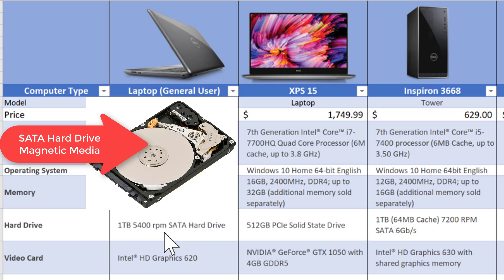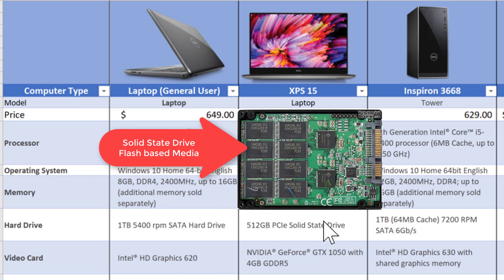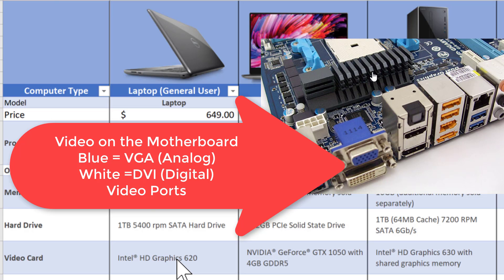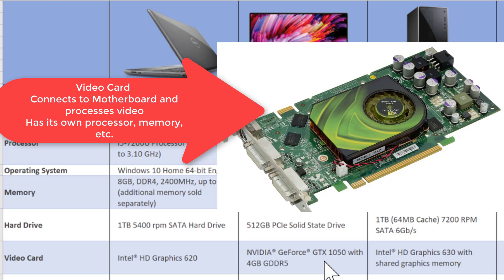Looking at the hard drive: the basic model has a 1 terabyte 5,400 RPM magnetic media spinny disk, whereas the power model has a solid-state drive that performs 50 to 100 times faster. The basic model has an integrated video card — video integrated onto the motherboard — while the power model has a dedicated video card that processes video off the motherboard and independently, with 4 gigs of GDDR5 independent RAM.